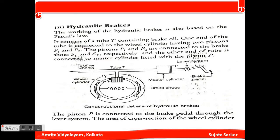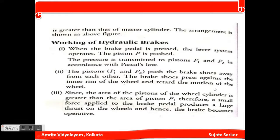The master cylinder is fitted with a piston P connected to the brake pedal through a lever system. The cross-sectional area of the wheel cylinder is larger than that of the master cylinder. When the brake pedal is pressed, the lever system operates the piston P, and the pressure is transmitted to pistons P1 and P2 in accordance with Pascal's law. P1 and P2 push the brake shoes away from each other, pressing against the inner rim of the wheel and retarding its motion. Since the area of the wheel cylinder piston is greater than that of piston P, a small force on the brake pedal produces a large thrust on the wheel, making the brake operative.